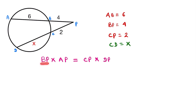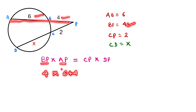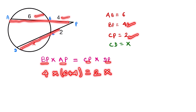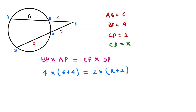We put in the values. The value of BP is equal to 4, and the value of AP is equal to AB plus BP, which is 6 plus 4. The value of CP is equal to 2, and the value of DP is equal to x plus 2. So we write: 4 into 10 is equal to 2 into (x plus 2).